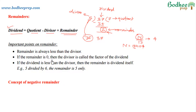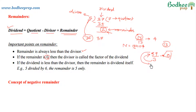Let us see some points to remember on remainders. First, the remainder is always less than the divisor. Second, if the remainder is 0 then the divisor is called a factor of the dividend — for example, 39 divided by 3 gives remainder 0 and quotient 13, meaning 3 is a factor of 39, or 39 is a multiple of 3. Third, if the dividend is less than the divisor, then the remainder is the dividend itself — for example, 5 divided by 6 gives remainder 5 and quotient 0.